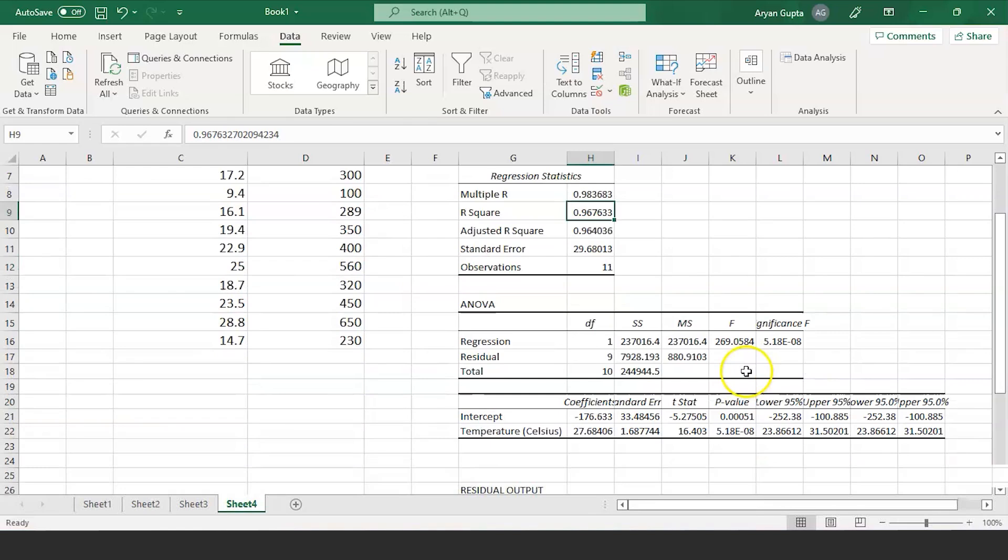Now, let's move a little more and analyze this coefficient. If you look at the coefficient, you will get the equation of the regression line. In our case, it is minus 176.33 plus 27.68 into temperature of the day. Substituting the temperature of the day for any given day, we can find the sales of the ice cream.